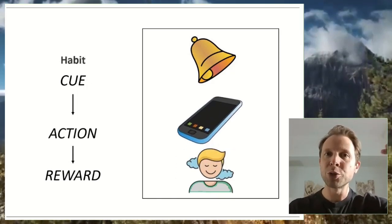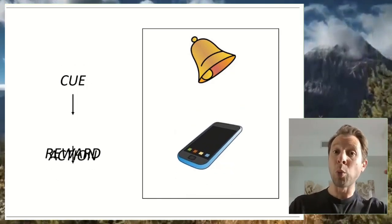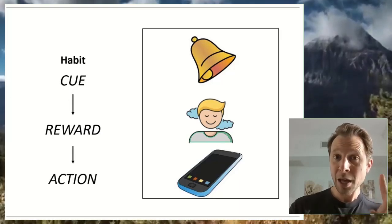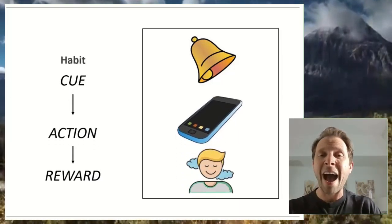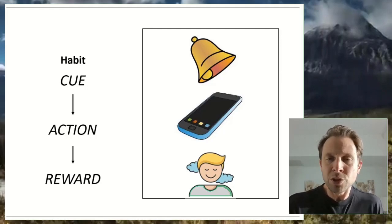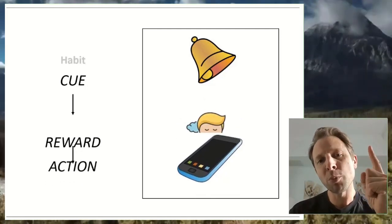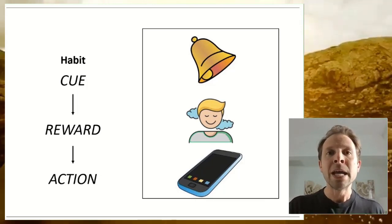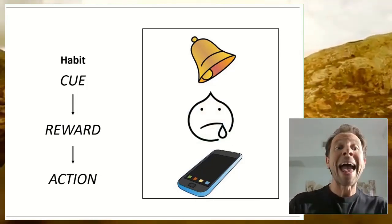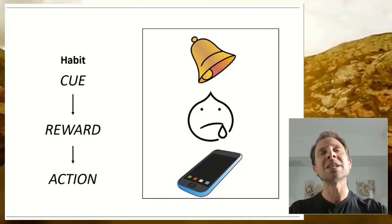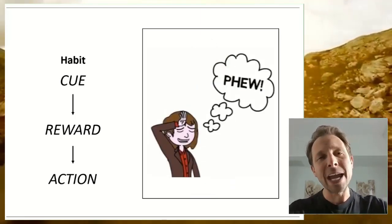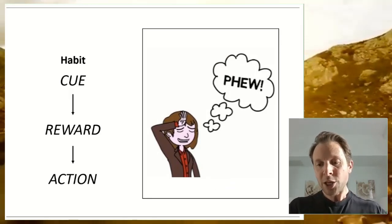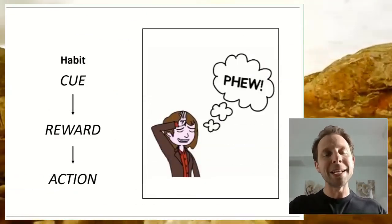Once we've moved from cue, action, reward to cue, reward, action, we've now built a habit. But here's the trick. If you get a hit of dopamine here after you've undertaken an action, it feels good. It feels rewarding. But once you get that hit of dopamine here before you've undertaken an action, it doesn't feel good. It doesn't feel rewarding. It feels like an urge. It feels like a craving. Now you have to undertake the action just to get a sense of calm and regain homeostasis within the system. So when we say human beings are addicted to technology, what we mean is we built enough habit cycles with tech that we have to behave in a certain way just to maintain balance.